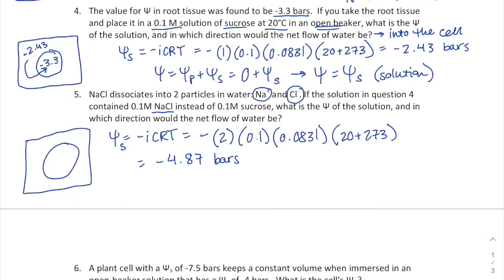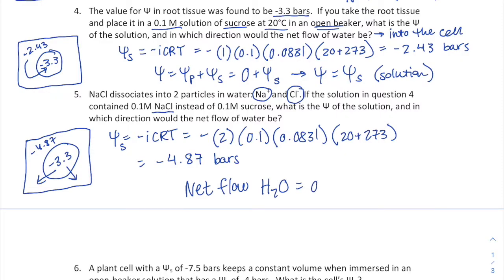Comparing the root tissue water potential of negative 3.3 bars to the solution's water potential of negative 4.87 bars: water moves from high to low water potential, so the net flow of water is out of the cell.